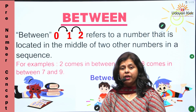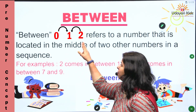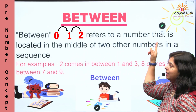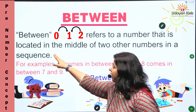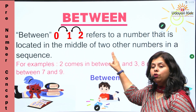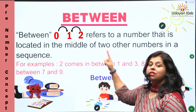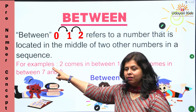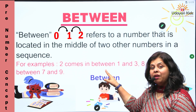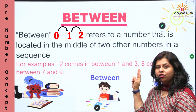So children, what is between? Between refers to a number that is located in the middle of two other numbers in a sequence. For example, two comes in between one and three.